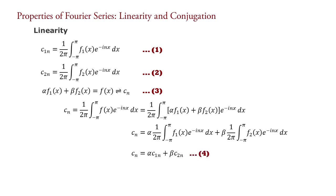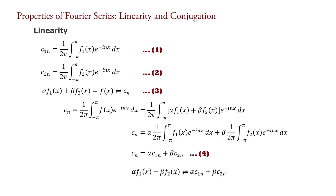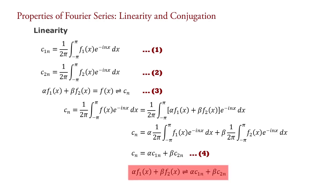Therefore it can be written as cn equal to alpha c1n plus beta c2n — equation 4. Equating equations 3 and 4: alpha f1(x) plus beta f2(x) corresponds to alpha c1n plus beta c2n. This means that when a signal is multiplied by alpha, the coefficient is also multiplied by alpha, and when we add two signals, the coefficients are also added. This is known as the linearity property of Fourier series.